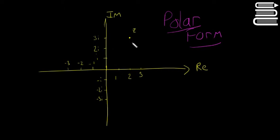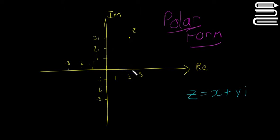When we look at complex numbers, we were previously looking at them in the form z = x + yi. We're looking at it like a coordinate — on the real axis it's x and on the imaginary axis it's y. For example, if it's 2 + 3i, on the x-axis it's 2 and on the y-axis it's 3. These are called rectangular coordinates because you're going across 2 and up 3.